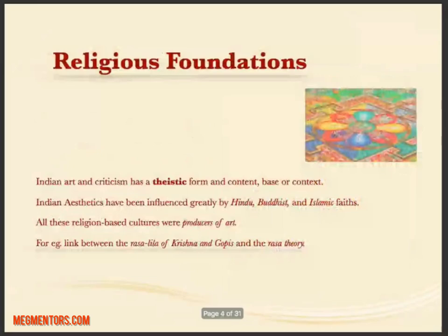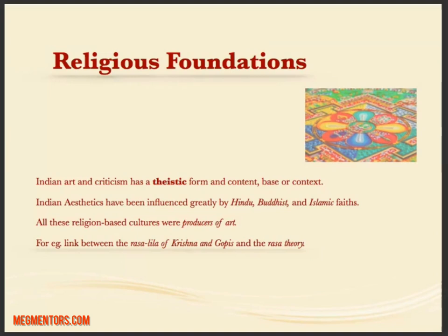Indian aesthetics has a few domains: religious foundations, mystic functions, and the influence of Krishna, as well as non-spiritual connotations. The religious foundations tell us that Indian art and criticism have a very theistic base. Whether it is Kamayani or Kalidas's literature, there are influences of Hindu faith and philosophy. Later, Sufi cultures, sher, and Urdu poetry also greatly influenced Indian aesthetics. When we visit monasteries, Buddhist culture has influenced paintings, usage of colors, and choice of motifs — all religion-based cultures have strongly influenced Indian aesthetics.